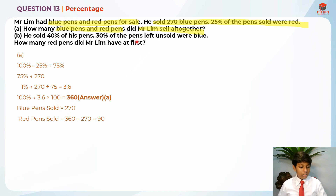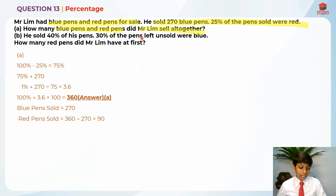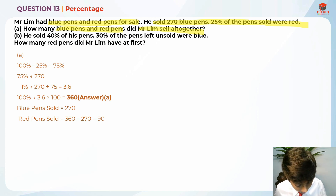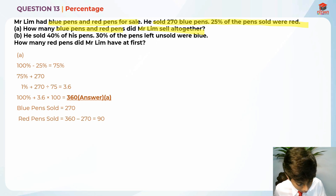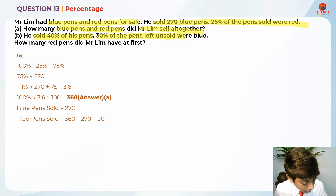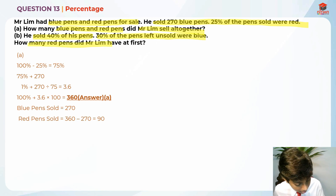The 30% of the pens left unsold were blue. So the pens left unsold is actually 60%. Let me highlight the important parts: he sold 40%, and 30% of the pens unsold were blue. How many red pens did Mr. Lim have at first?